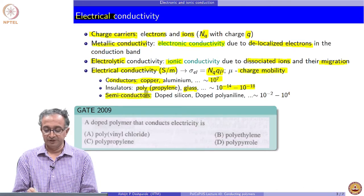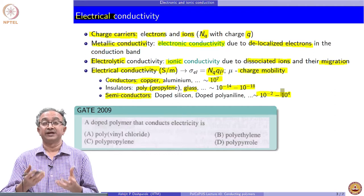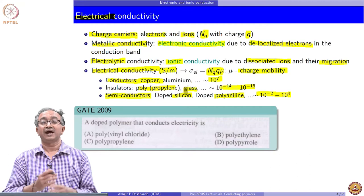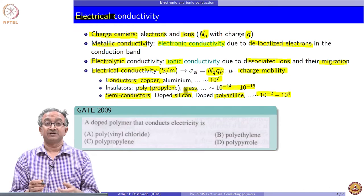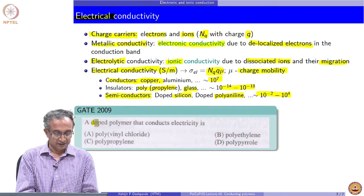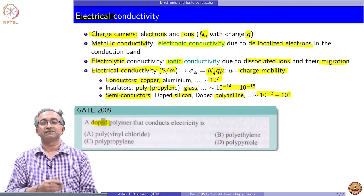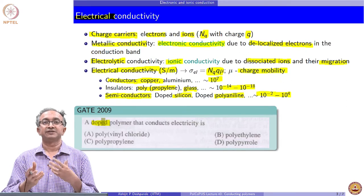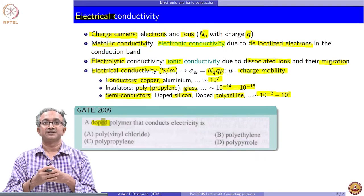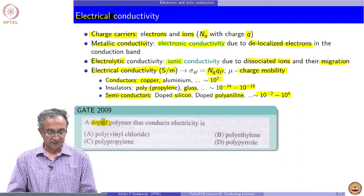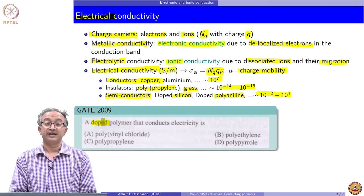Semiconductor materials fall somewhere in between, with conductivities of the order of 1 thereabouts. Polyaniline, a conducting polymer, and silicon used in semiconductor devices have conductivities in this range. One thing that induces conductivity in semiconductor materials is doping. The idea behind doping is to make electrons delocalized. In silicon alone, electrons are not delocalized, but when a dopant is added, electronic interactions between the dopant and the silicon induce delocalization and change the valence and conduction bands of the host species. Something similar is observed in polymers.